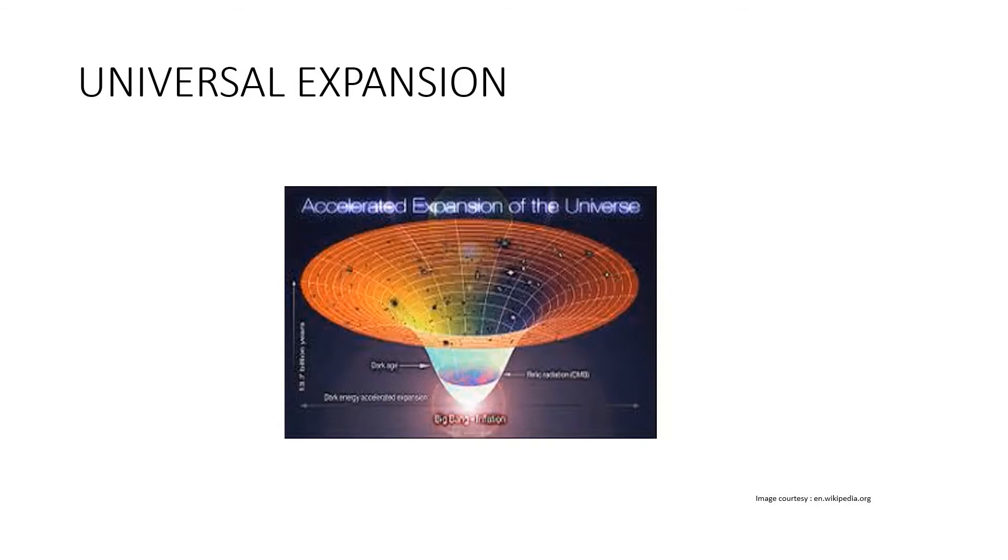It is found that the distant galaxies are moving away from Earth and the further away they are, the faster they are moving. A galaxy of megaparsec away is moving away from us at 70 kilometers per second.